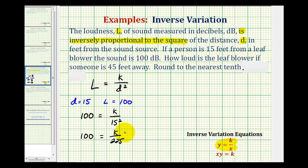Now to solve this for k, we would multiply both sides of the equation by 225. You can think of this as being over one, so this simplifies to one. So on the left side, we have 225 times 100. That's going to be 22,500. And on the right side, we have k.